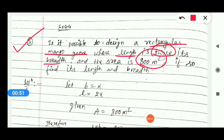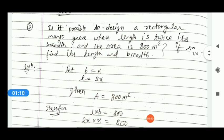First we will form a quadratic equation. After that we will check the nature of roots using the three conditions: b²-4ac greater than 0, equal to 0, or less than 0. If greater than or equal to 0, the roots exist and it is possible. If b²-4ac is negative (less than 0), it is not possible.